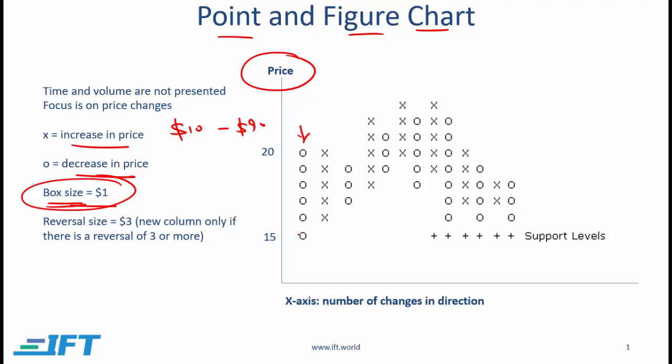So here over several days the stock price went down. If on a given day the stock price doesn't change much or it doesn't change by at least $1, then no addition is made to the chart. So we can't tell how long this downtrend took. Therefore the X axis doesn't really represent time.